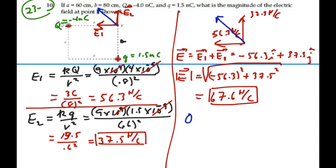I guess that angle would be inverse tangent of the y over the x, inverse tangent of 37.5 over 56.3. And that would be 33.7 degrees north of west. And that would be the angle right here.